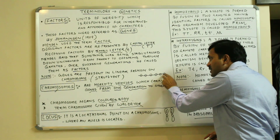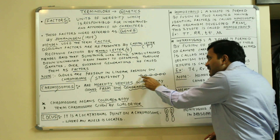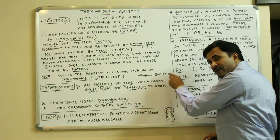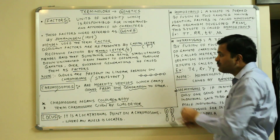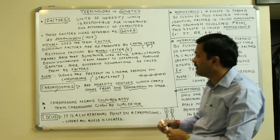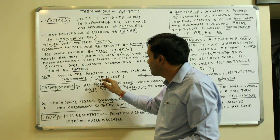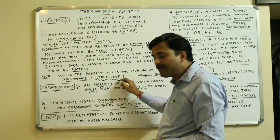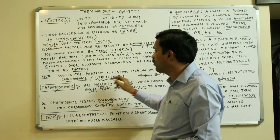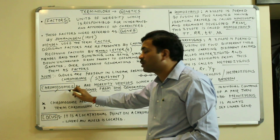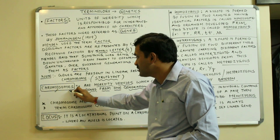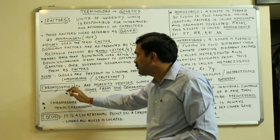One more thing you must remember: genes are always present in linear fashion on the chromosome. If this is the chromosome, then genes are present on it in linear fashion. This statement was given by Sutton.